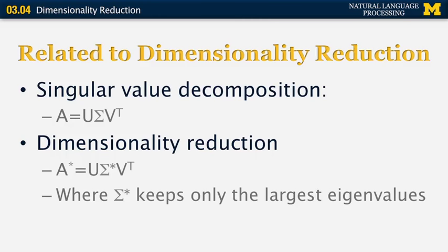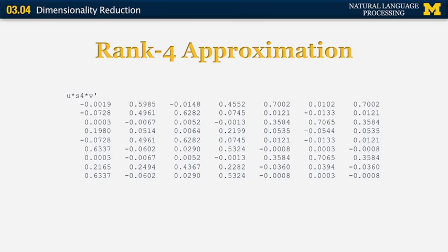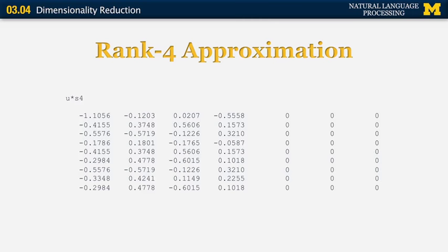This is the rank-four approximation of sigma — it has a few more zeros than the original matrix. If we multiply U with Σ₄ and Vᵀ, we get a different representation of A that won't be significantly different from A. We can then compute the representations of the terms and the documents in the new semantic space through appropriate matrix multiplications: U·S₄ or S₄·V' — giving us the representations of documents and terms respectively in the new semantic space.